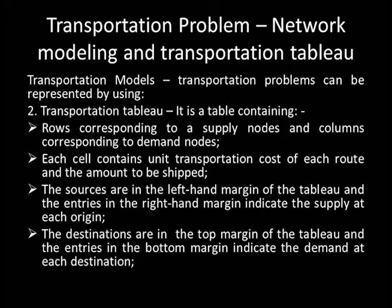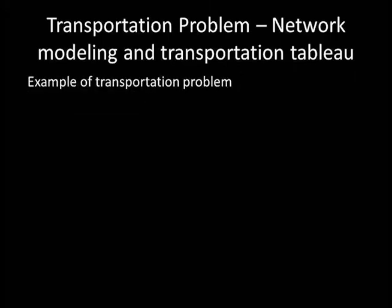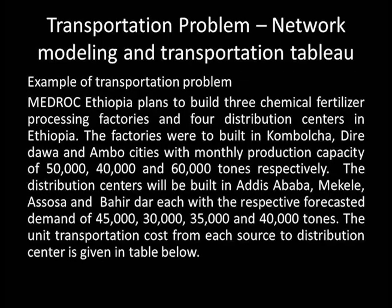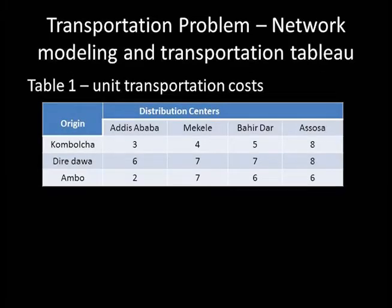For better illustration of these models, let's support our discussion with an example. Medoc Ethiopia plans to build three chemical fertilizer processing factories and four distribution centers in Ethiopia. The factories will be built in Kombolcha, Dire Dawa, and Ambo, with monthly production capacities of 50,000, 40,000, and 60,000 tons respectively. The distribution centers will be built in Addis Ababa, Mekele, Assosa, and Bahir Dar, each with forecasted demands of 45,000, 30,000, 35,000, and 40,000 tons. The unit transportation costs from each source to destination are given in Table 1.